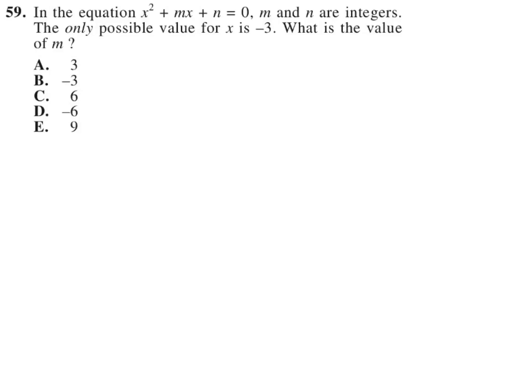In the equation x squared plus mx plus n equals 0, m and n are integers. The only possible value for x is negative 3. What is the value of m?